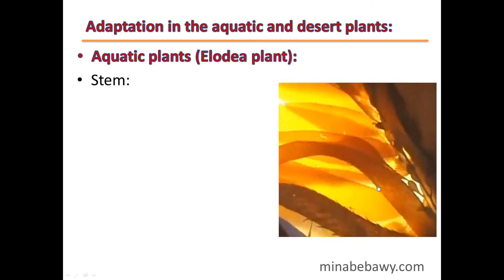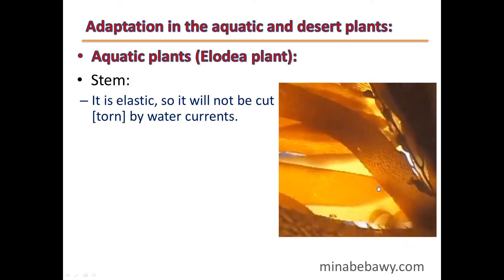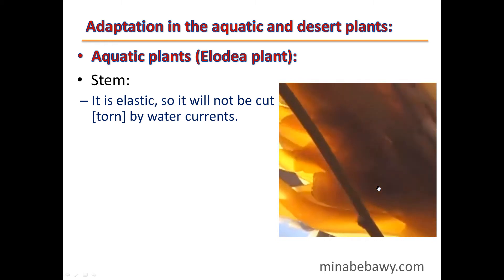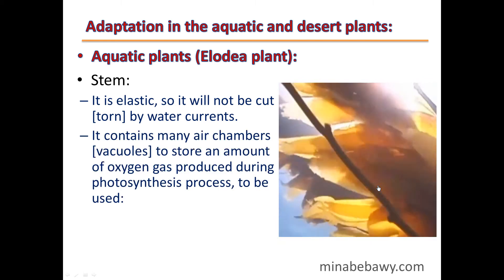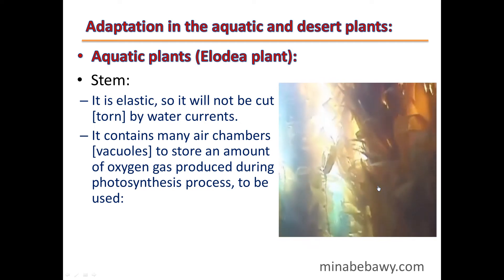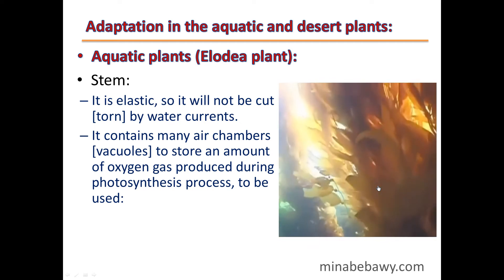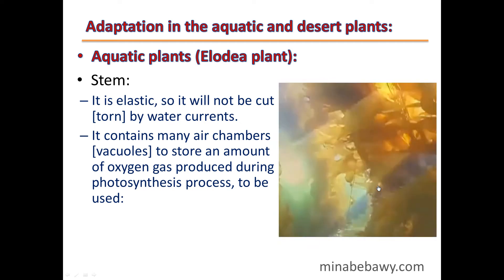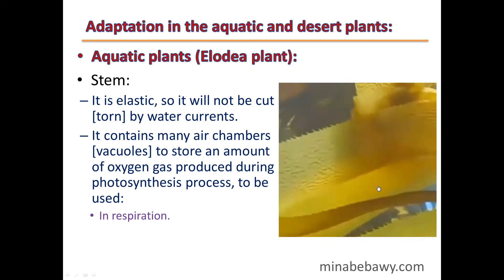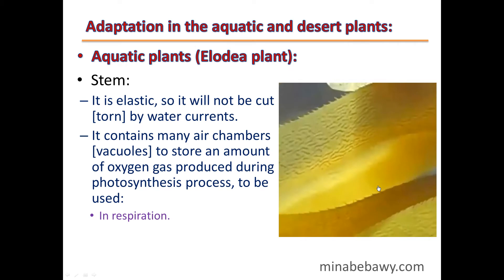The stem is elastic so it will not be cut or torn by water currents. It also contains many air chambers or vacuoles to store oxygen gas produced during photosynthesis. This oxygen is used first for respiration, and second to help the plant float in lighted regions of water.